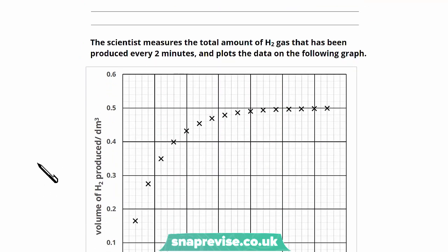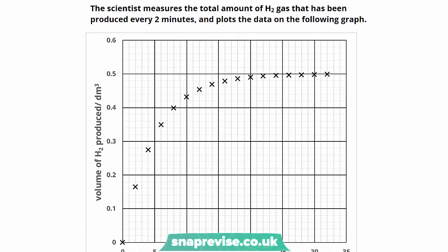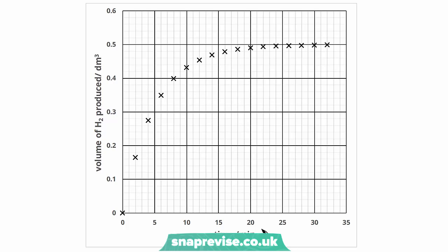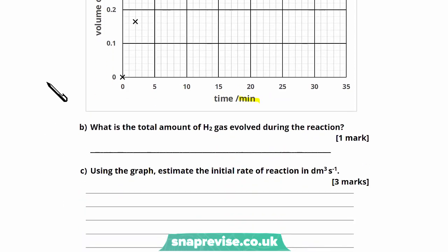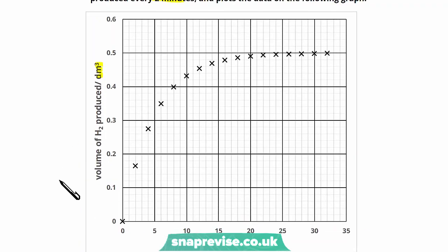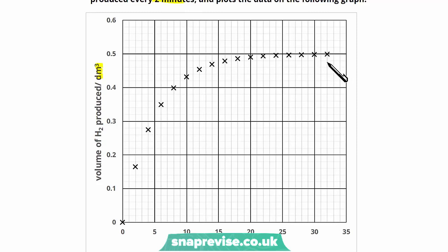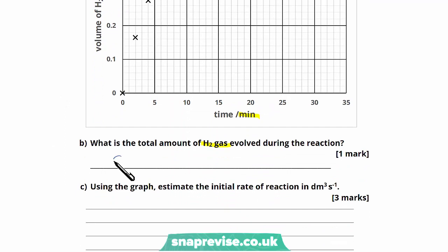Moving on, we're told that a scientist measures the total amount of hydrogen gas produced every two minutes and plots the data on a graph. On the x-axis we have time in minutes and on the y-axis the volume of hydrogen gas produced in dm³. The question asks: what is the total amount of hydrogen gas evolved? We can see there is a plateau at around 0.5 dm³.